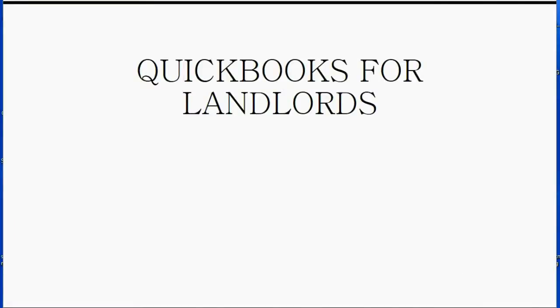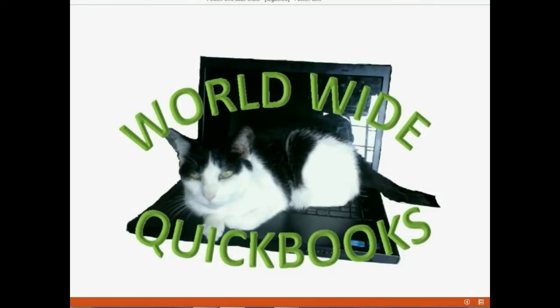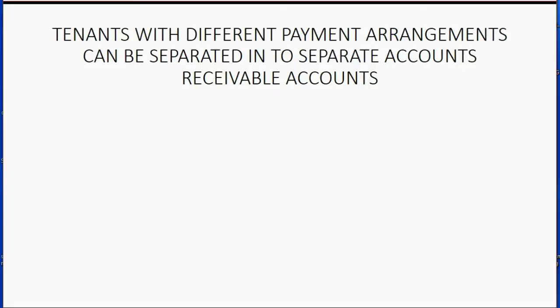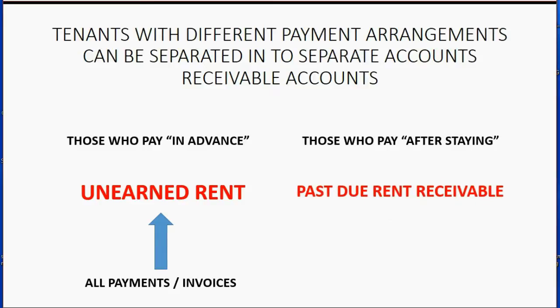It is very important that landlords using QuickBooks know how to adjust the receivables account. Tenants with different payment arrangements can be separated into separate accounts receivable accounts. Those who pay in advance can have all their invoices and payments recorded in the unearned rent account, which is a receivable type of account. Those who pay after staying can have all their payments and invoices recorded in the past due rent receivable account. Keeping them separate will make sure that all your records in QuickBooks are accurate at any given moment.